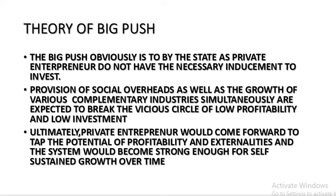Underdeveloped economies have poor infrastructure, so provision of social overhead is much needed for the growth of various complementary industries simultaneously. This is expected to break the vicious circle of low profitability and low investment, because when infrastructure is created every firm will enjoy external economies and there will be growth of many industries. The private entrepreneur would then come forward to tap potential profitability, and the system would become self-sustaining over time once the big push is given by the government.